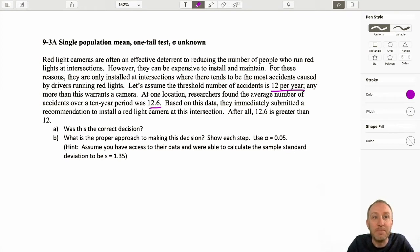At one location, we found the average number of accidents over a 10 year period is 12.6. Based on this data, they immediately submitted recommendations to install a camera at this intersection. After all, 12.6 is greater than 12, right? This is one of the biggest problems that I find students struggle to overcome—I can see 12.6, well yeah, that's greater than 12, so we should go ahead and put a camera there. But remember, these are just random events, right? Every year, this is over a 10 year period, every year the number of accidents has been something different. Some have been maybe above, and some have been perhaps below.